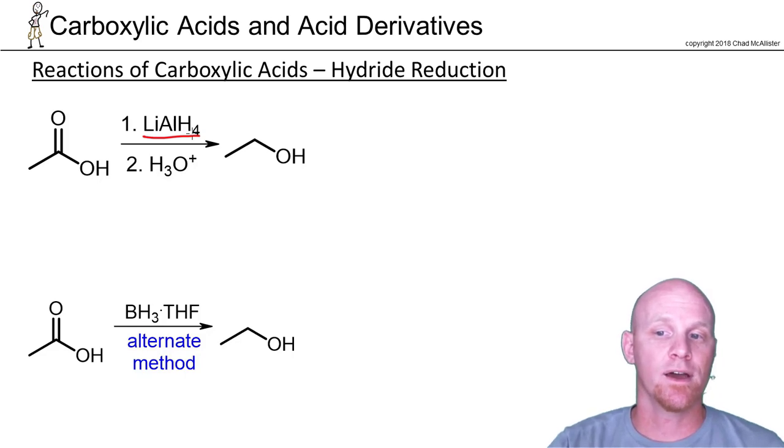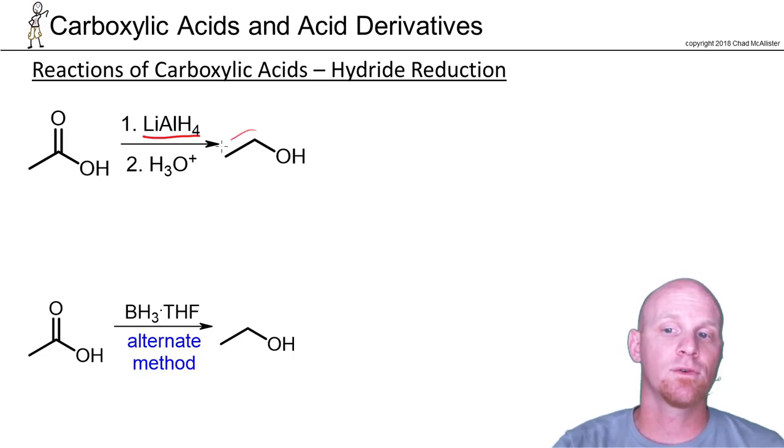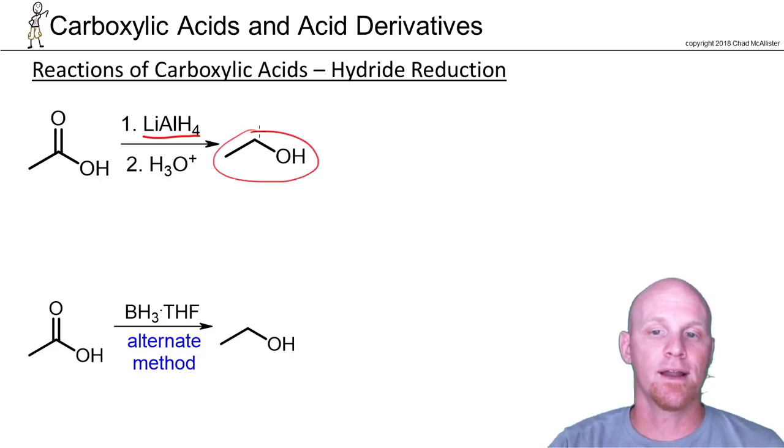Here again we'll use lithium aluminum hydride, just like we have been for the whole chapter, and we can reduce this all the way to the alcohol. It looks like we're doing this twice—we're going to replace the OH with an H, make an aldehyde, and then reduce that down to an alcohol. Well, it turns out the mechanism is completely different. I mentioned that earlier—I'm not going to go through the mechanism. It's not one you're likely to be responsible for, and if you are, my apologies.